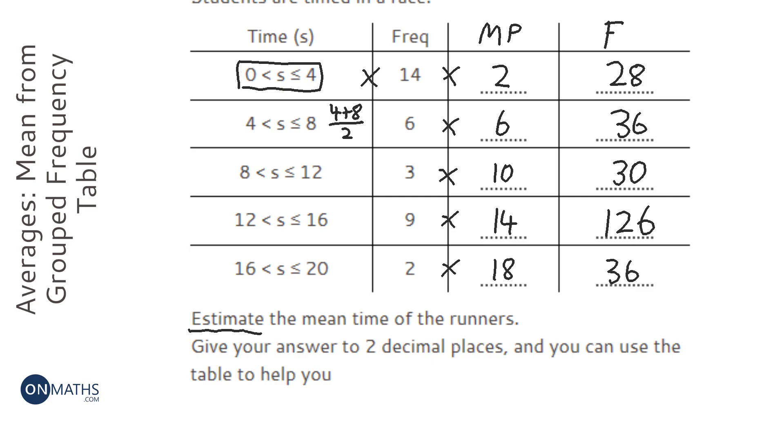And this is our, I call this the FX, although in this case, we are calling the first one S, so it's the FS column. And then we need to find the sum of the FS column. So, we're going to add up 28, 36, 30, 126, and 36 in the calculator, which is 256.